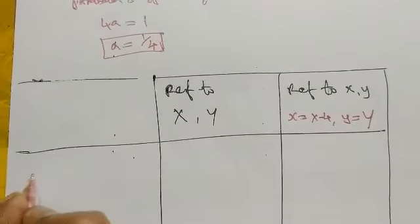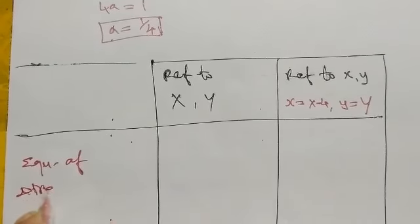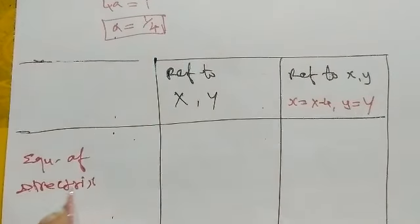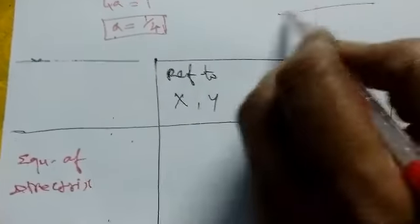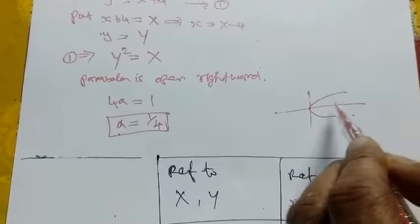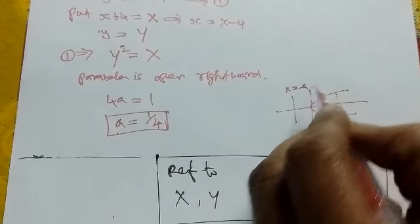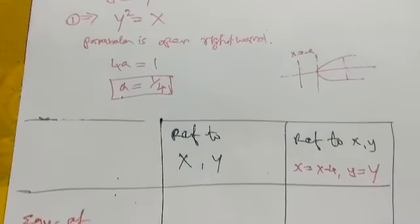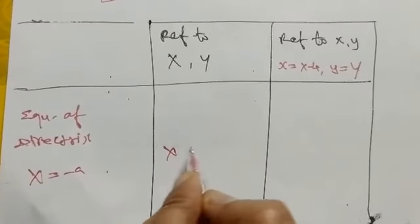The directrix: parabola is open rightward. Open rightward means the directrix is opposite side, that is X equal to minus a. So capital X equal to minus a, but capital X equal to a is minus 1 by 4.